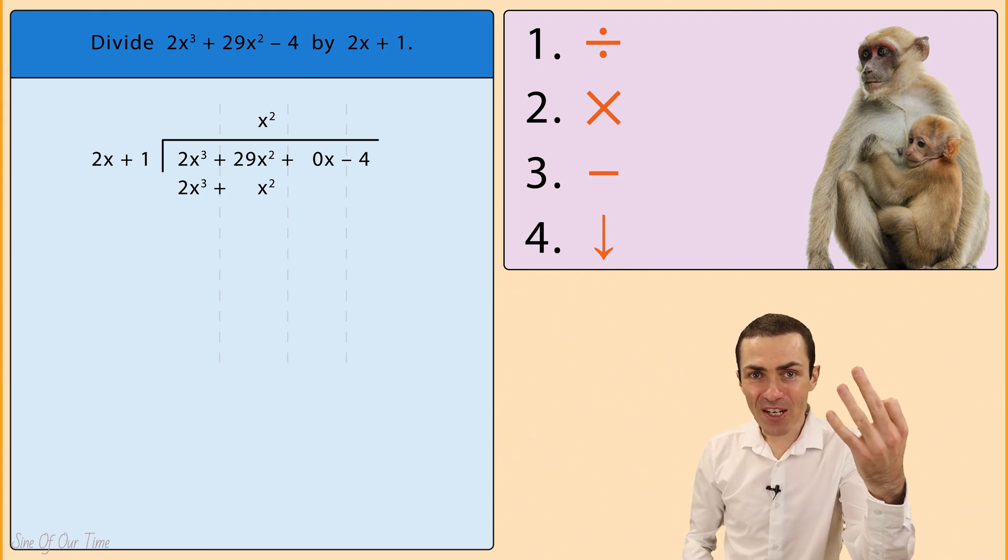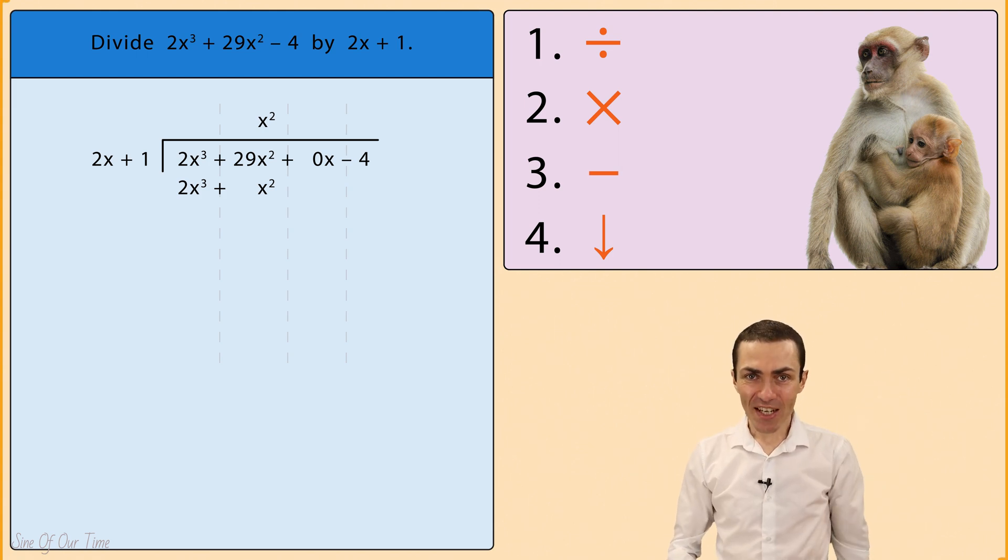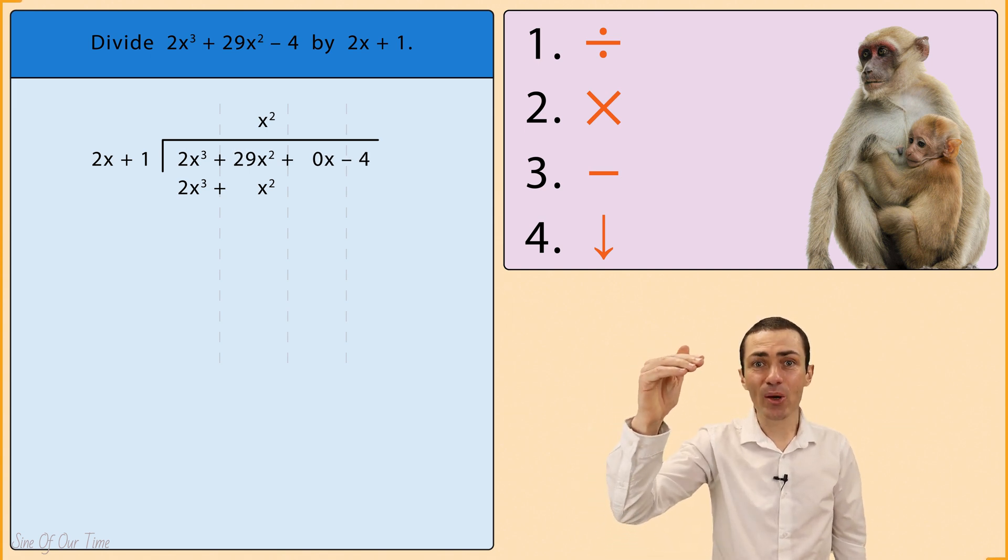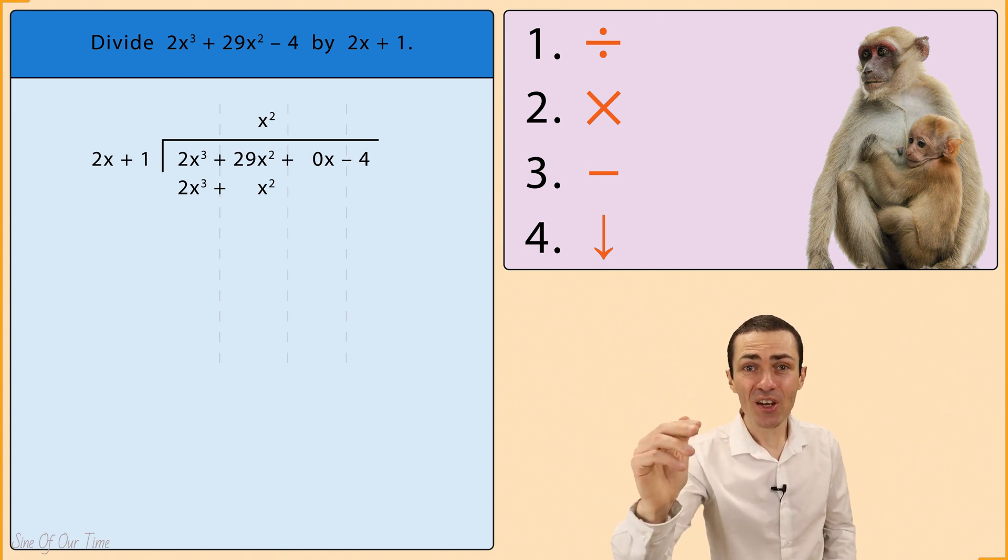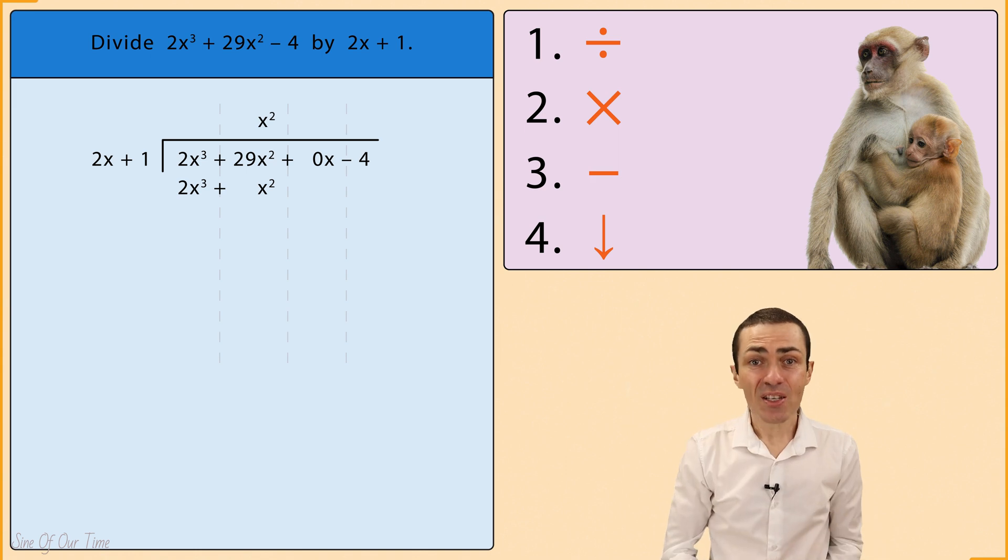Time for step 3: Subtract. We take the terms in the dividend and we subtract the terms that we have just written below it, working with each column separately.